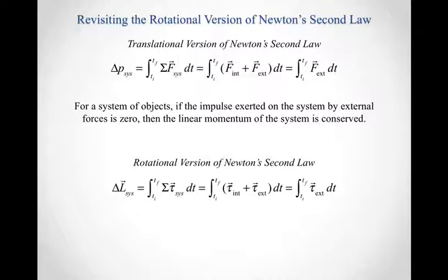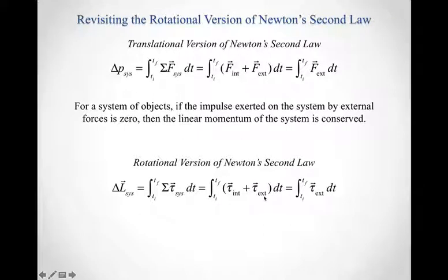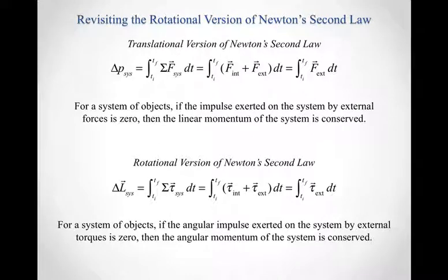The same is true for the rotational version. For a system of rotating objects, the net torque breaks up into internal torques — which cancel out — plus external torques. So the change in angular momentum of the system equals the integral with respect to time of the net external torque times dt. If the external angular impulse exerted on the system is zero, then the angular momentum of the system is conserved — which leads us directly into conservation of angular momentum.